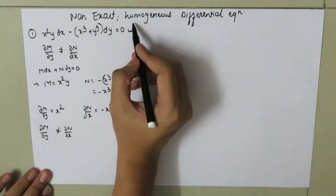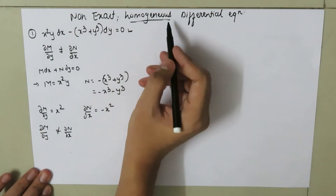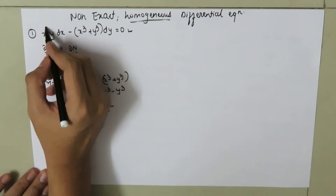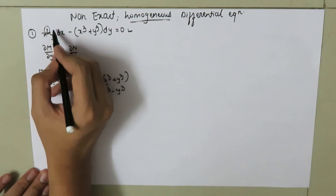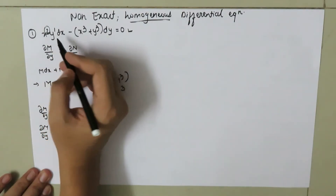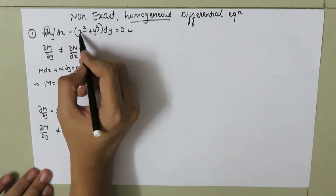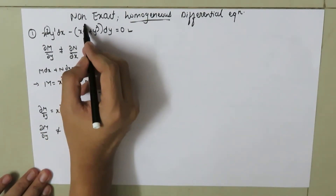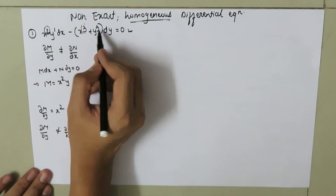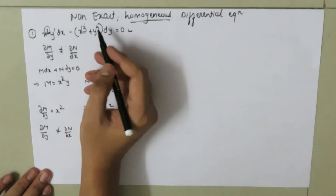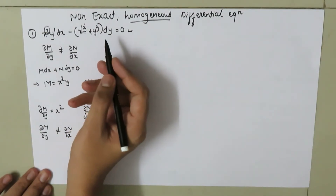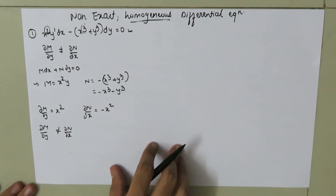Now what do we mean by homogeneous? If you closely look, the power of x is 2, the power of x is 1, and the power of y is 1, giving an overall power of 3. Here the power of x is 3, and the power of y is also 3. If the power of all the terms is the same, then the differential equation is called homogeneous.